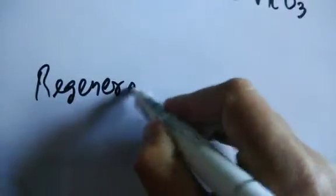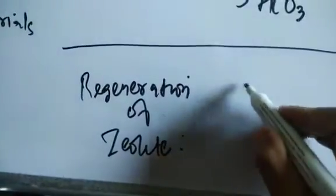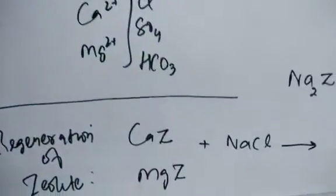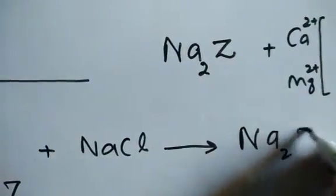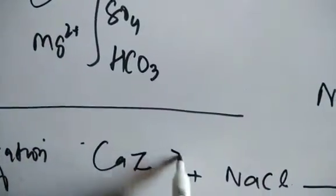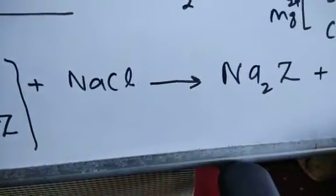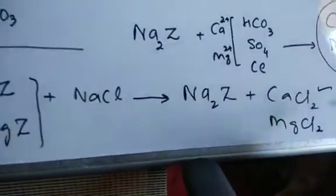For regeneration of the zeolite: the calcium and magnesium-loaded zeolite is treated with a high concentration sodium chloride solution. This displaces the calcium and magnesium ions from the sites, regenerating Na₂Z (sodium zeolite) and releasing calcium chloride and magnesium chloride, which are soluble and wash out with water.